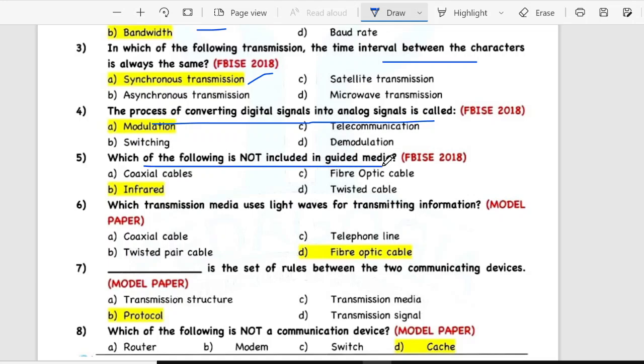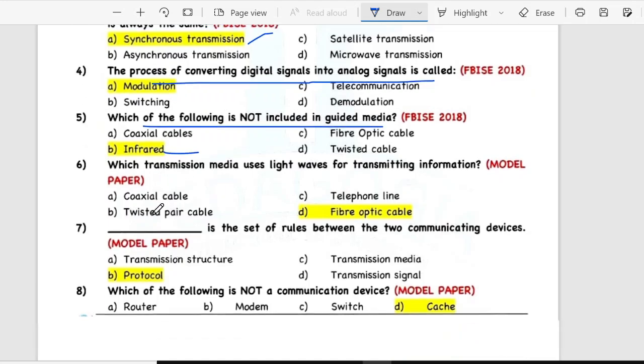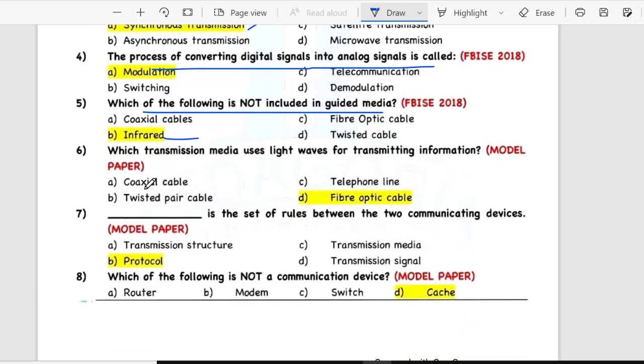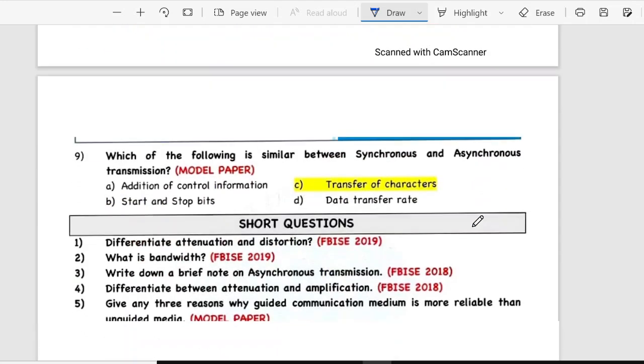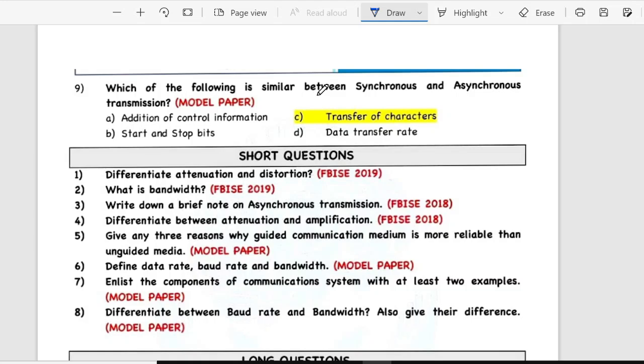Which of the following is not included in guided media? Infrared. Sixth is transmission media uses light waves for transmitting information: fiber optic cable. Dash is the set of rules between two communicating devices: protocol. Eighth is the following is not a communication device: cache. Ninth is the following is similar between synchronous and asynchronous transmission: transfer of characters.